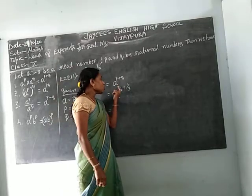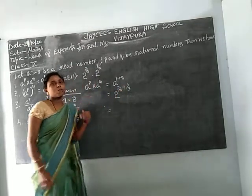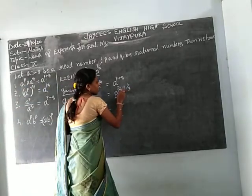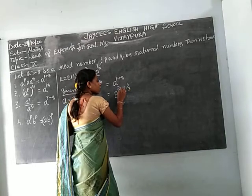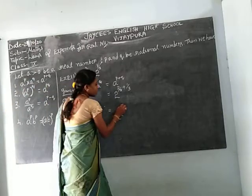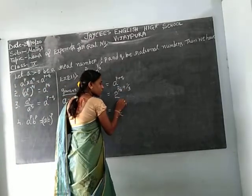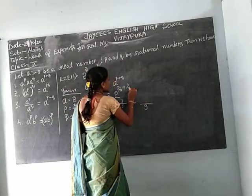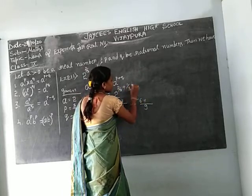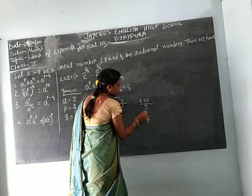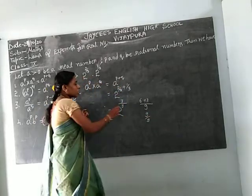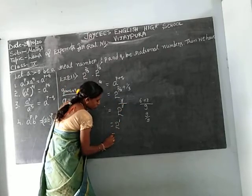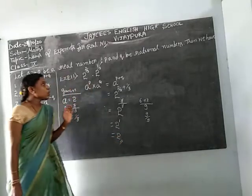P means 2 by 3 plus Q means 1 by 3. Since they are fractions with the same denominator, we add the numerators: 2 plus 1 is 3, over denominator 3. So the result is 3 by 3, which cancels to 1. Therefore the answer is 2 to the power of 1, which equals 2.